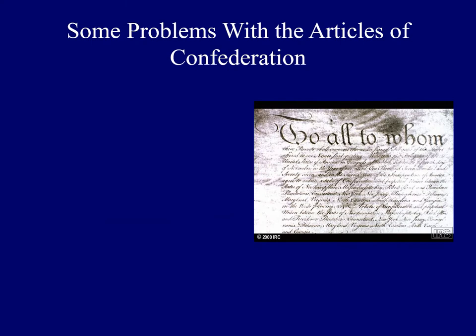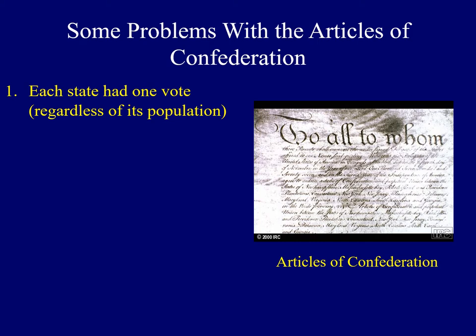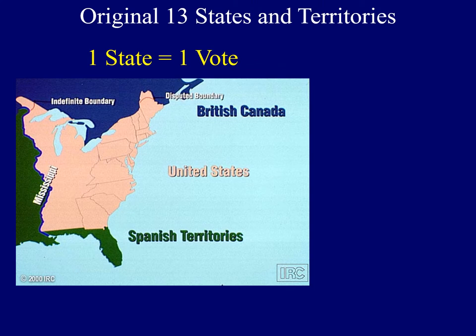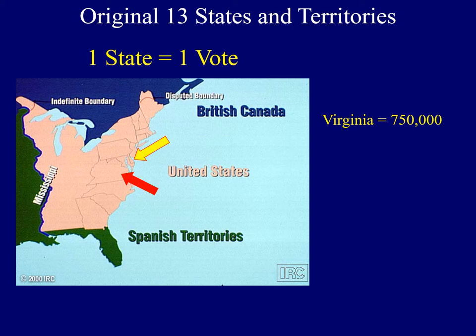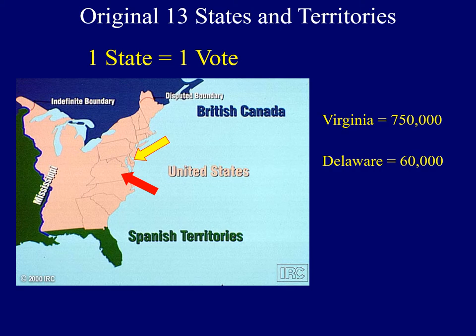While the Articles provided enough unity for the colonies to defeat the mighty British Empire, there were some problems. First, each state had one vote when it came to passing legislation, regardless of its size or population. One state had one vote. This meant a large state like Virginia, with a population of about 750,000 people, had as much political clout as a state like Delaware with only 60,000 people. Was this going to be a nation based upon the power of the people or the power of individual states?